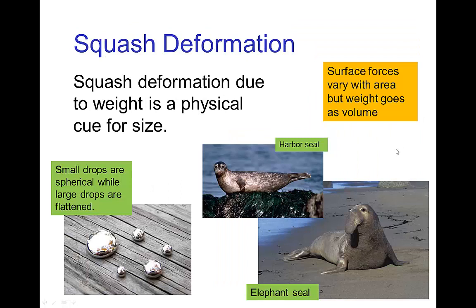Similar to this is squash deformation, because the surface force that maintains the shape of an object varies with area, but the total weight being maintained is proportional to volume. So small droplets tend to be more spherical, while larger droplets tend to be more flattened. We see similar shape dependence in animals — for example, the harbor seal, which is smaller, compared to the elephant seal, which is larger.